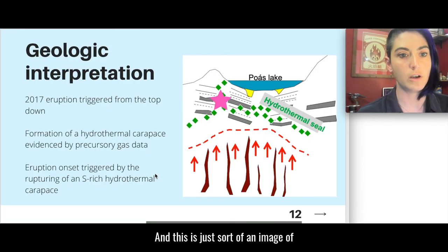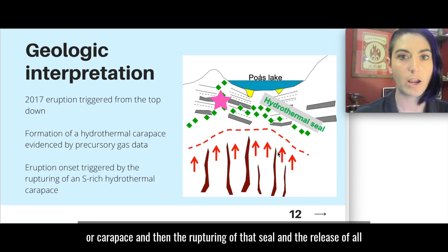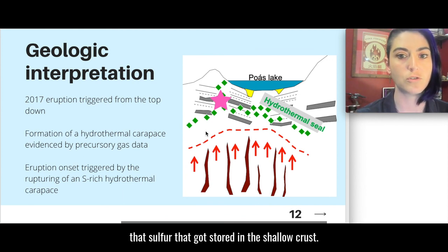And this is just an image of what I was just describing, showing the increased movement of those gases, the buildup of the hydrothermal seal or carapace, and then the rupturing of that seal and the release of all that sulfur that got stored in the shallow crust.